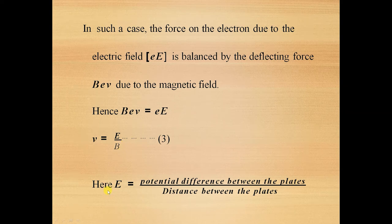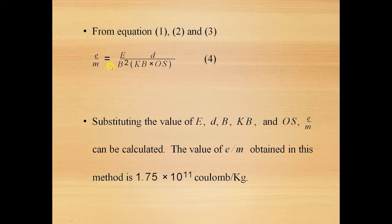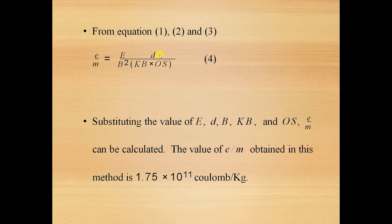E (electric field) can be obtained by the formula: potential difference between the plates divided by the distance between the plates, which can be easily obtained from the experimental setup. Finally, we arrive at the final equation: E/M = E × D / (B² × KB × OS). All the parameters are now known — E is the strength of the electric field, B is the strength of the magnetic field, D is the shift of the electron spot on the screen, and KB and OS are parameters obtained from the geometry of the instrument or discharge tube. Thereby we measure the charge-to-mass ratio of the electrons, E/M, or the specific charge of the electrons.